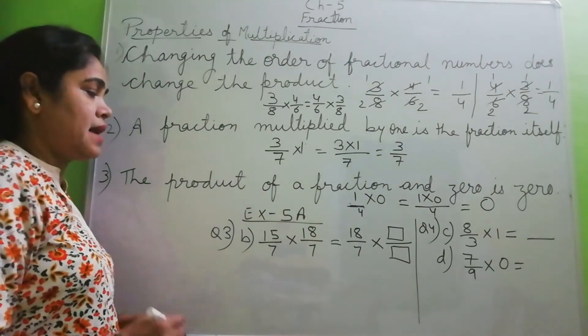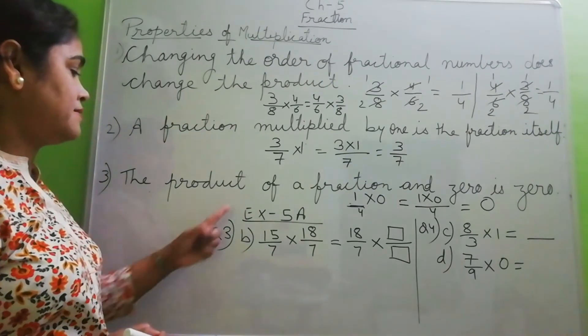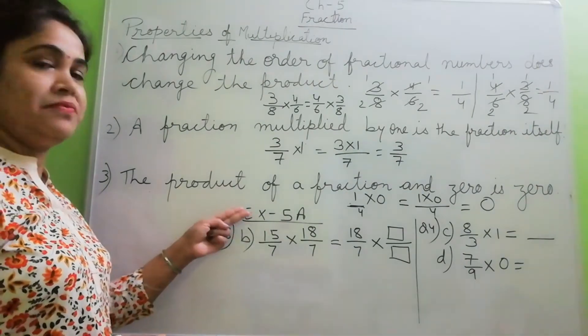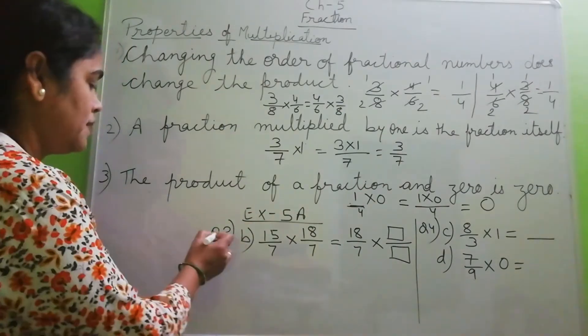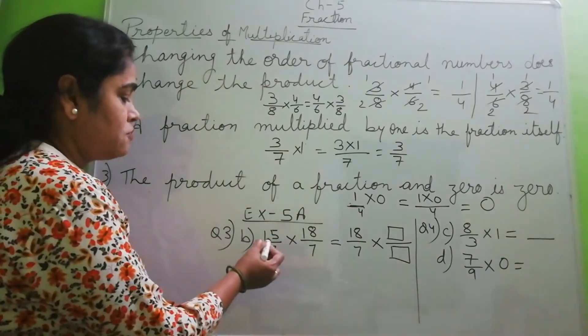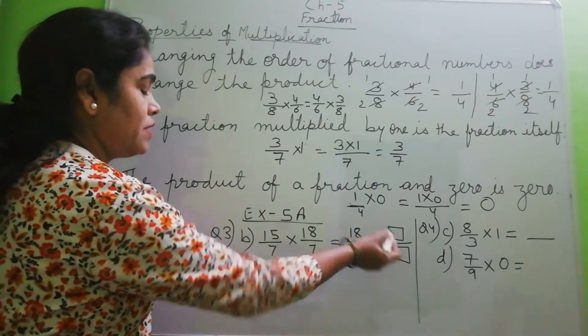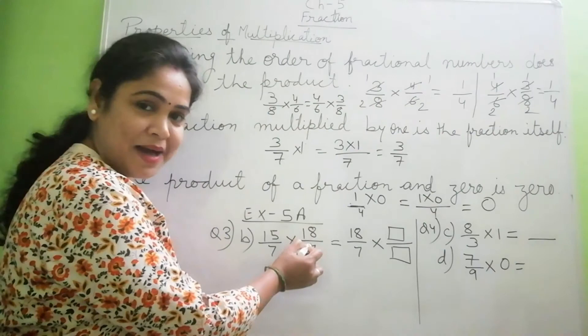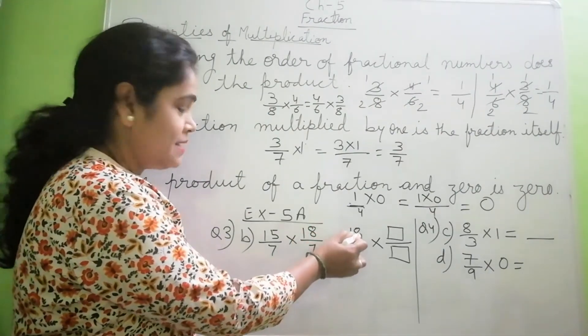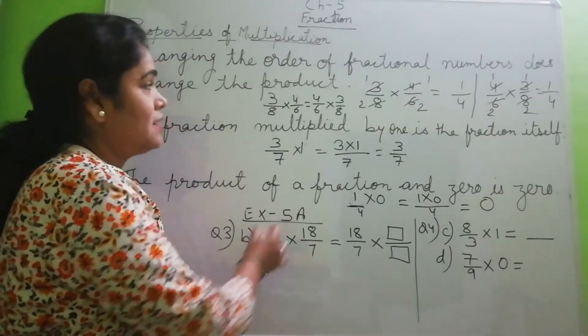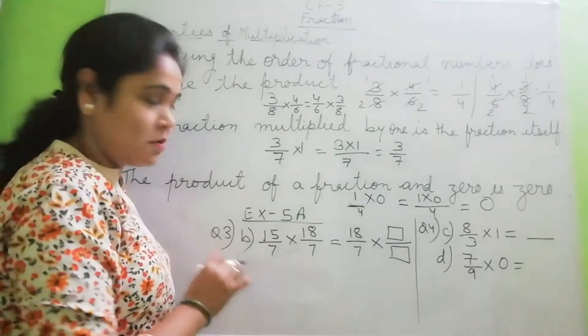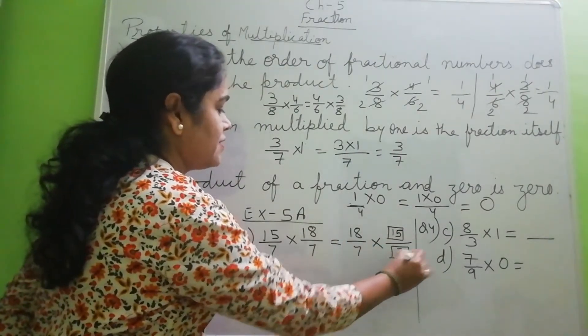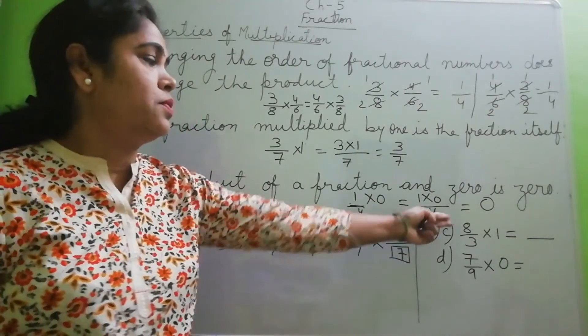So I am solving question of exercise 5A, question number 3, B number. So using property, how could we write the answer here? Tell me. 15 by 7 into 18 by 7 is equal to 18 by 7. Then the order we can change, first property. So we will write 15 by 7. Next question for C number.